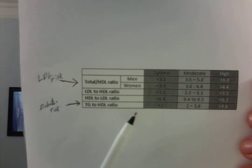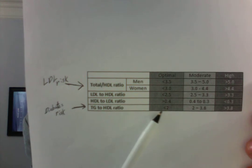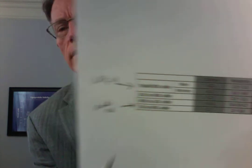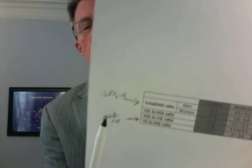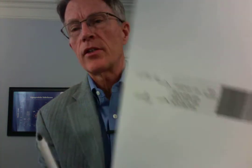Once the triglyceride over HDL ratio gets to 2, 3, and 4, it starts to show very significant increased risk for diabetes or insulin resistance. How does triglyceride over HDL indicate risk for diabetes? We'll talk about that too.